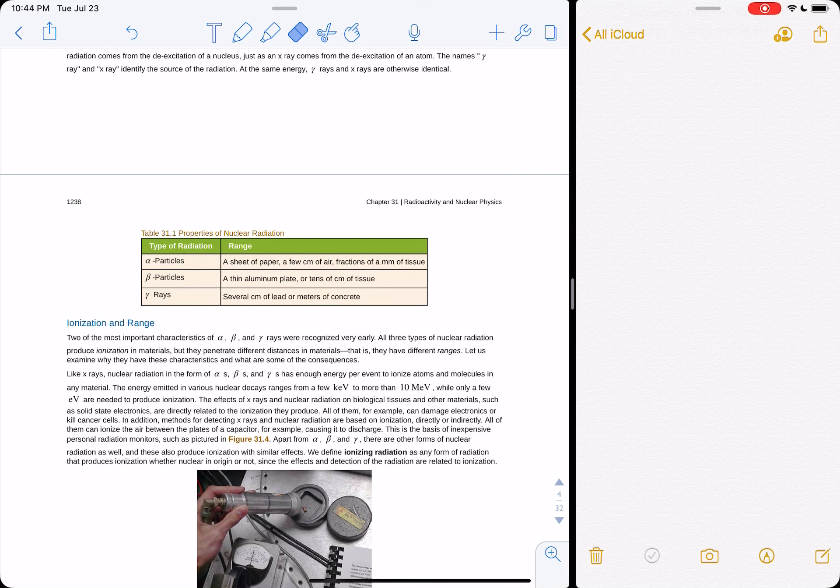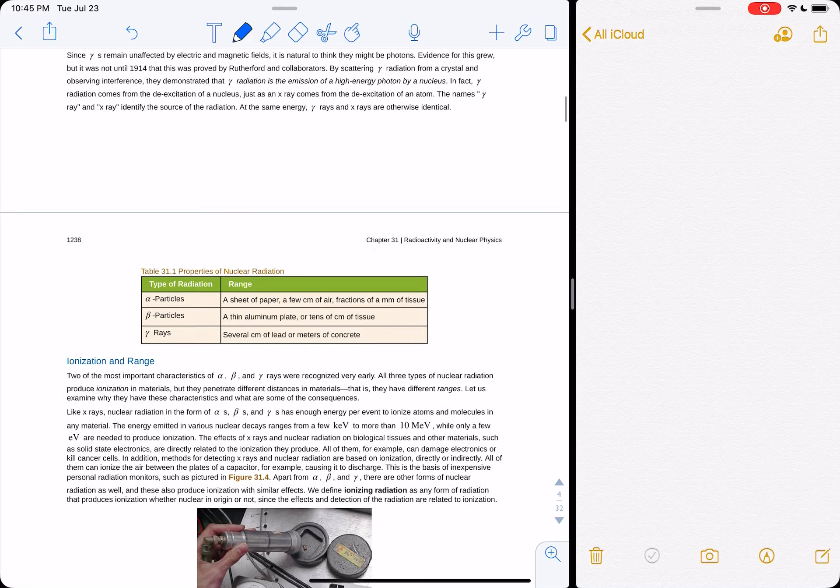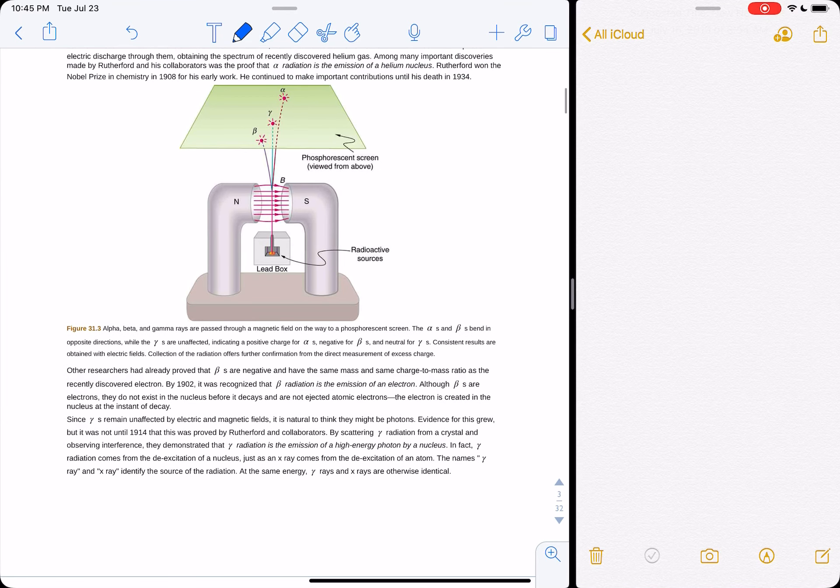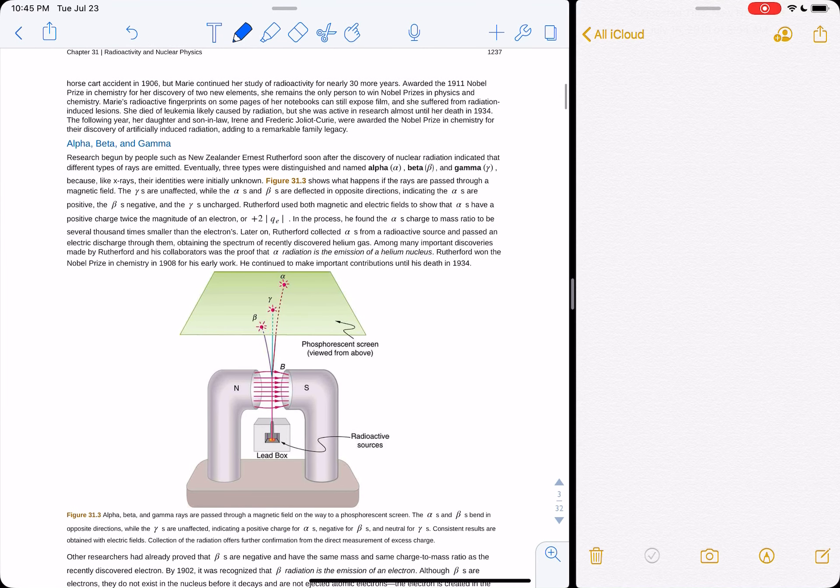Beta particles, you can stop with a little piece of aluminum. It'll travel through most of you before stopping. Gamma rays actually are the most dangerous of the particles. And you need a significant amount of lead to stop them, a very high-density material.